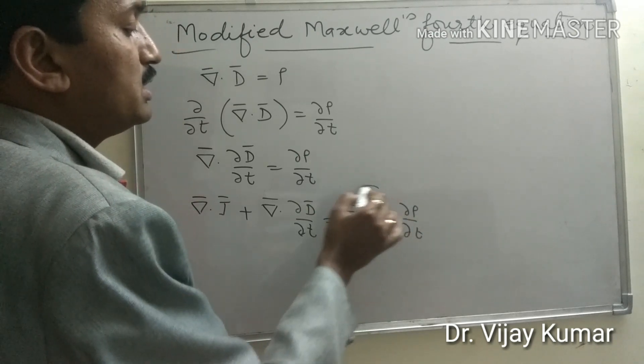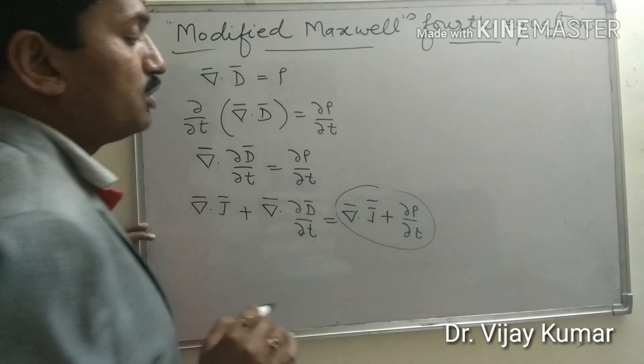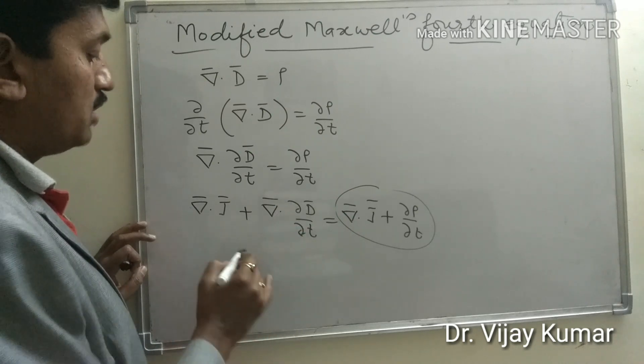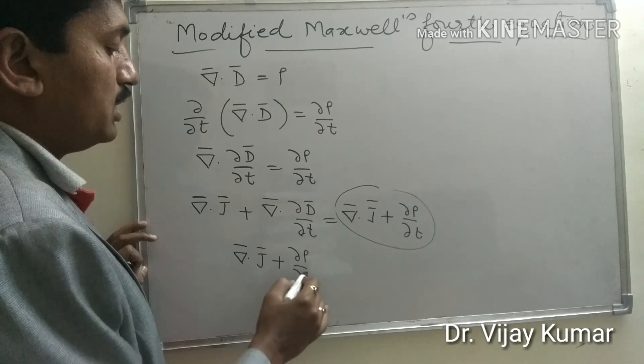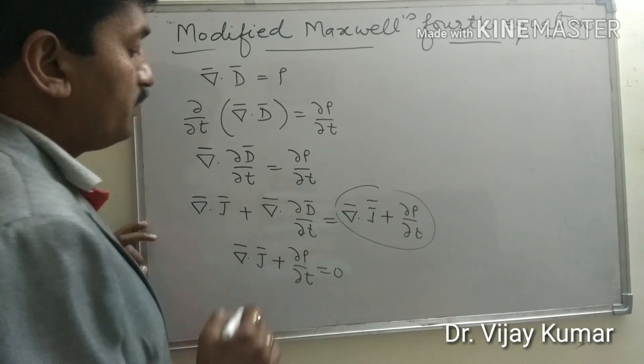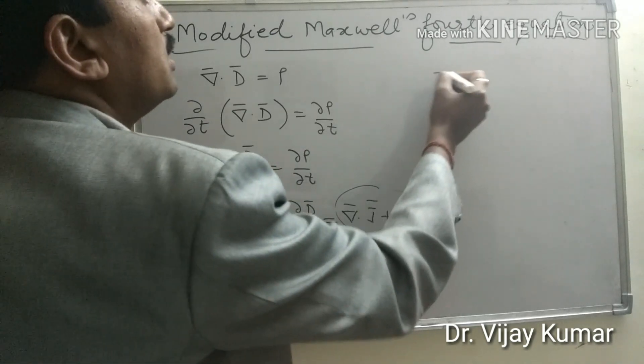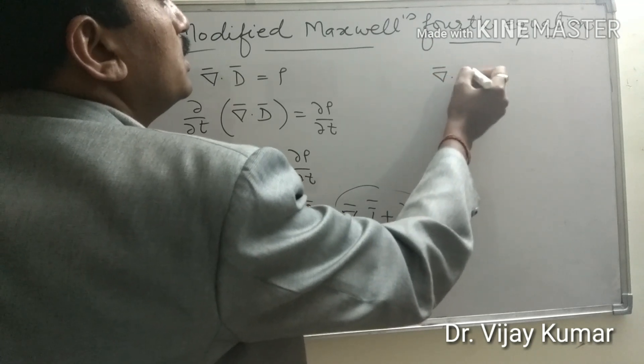This right hand side becomes equation of continuity which is equal to zero. Del dot J plus del rho upon del t equal to zero.